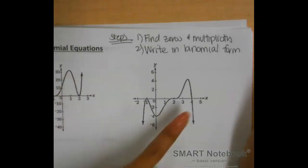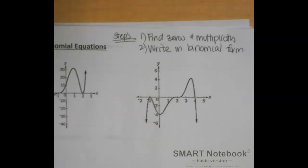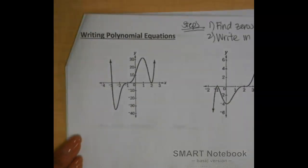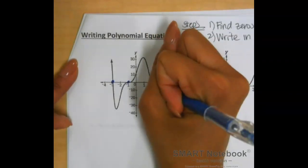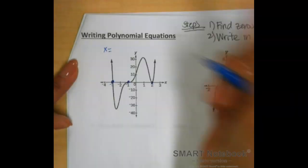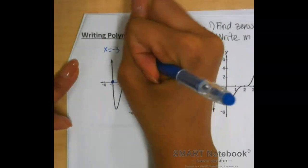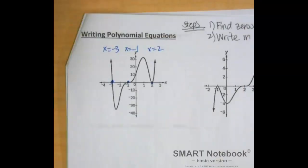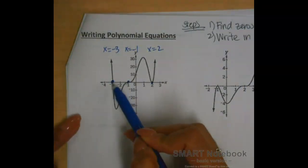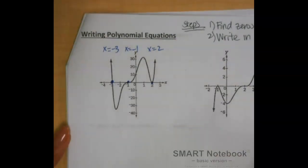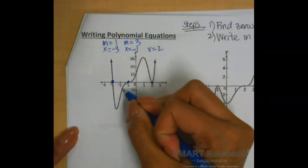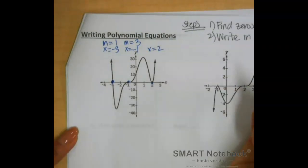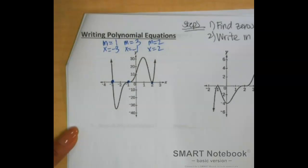Let me work through an example on the left while you do the question underneath the steps. There are three x-intercepts: x equals negative 3 with multiplicity 1 (it crosses like a linear function), x equals negative 1 with multiplicity 3 (it looks like a cubic function with that curve), and x equals 2 with multiplicity 2 (it bounces like a quadratic). Those are the multiplicities.